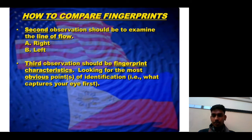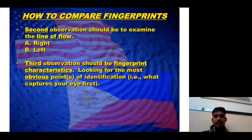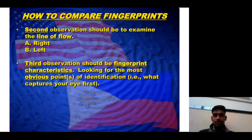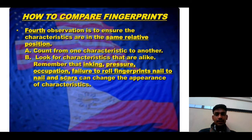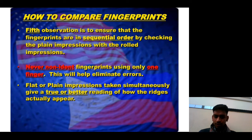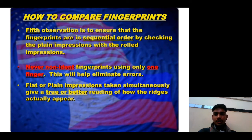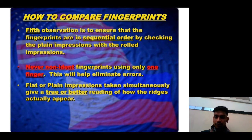When comparing fingerprints, follow these observations: First, examine the line of flow — whether starting from right or left. Third, identify fingerprint characteristics, looking for the most obvious point of identification. Fourth, ensure characteristics are in the same relative position by counting from one characteristic to another. Note that inking, pressure, occupation, failure to roll the fingerprint, nails, and scars can change the appearance of characteristics. Fifth, ensure fingerprints are in sequential order by checking plain impressions with rolled impressions. Never identify fingerprints using only one finger — use flat or plain impressions taken simultaneously for a true reading of how ridges actually appear.